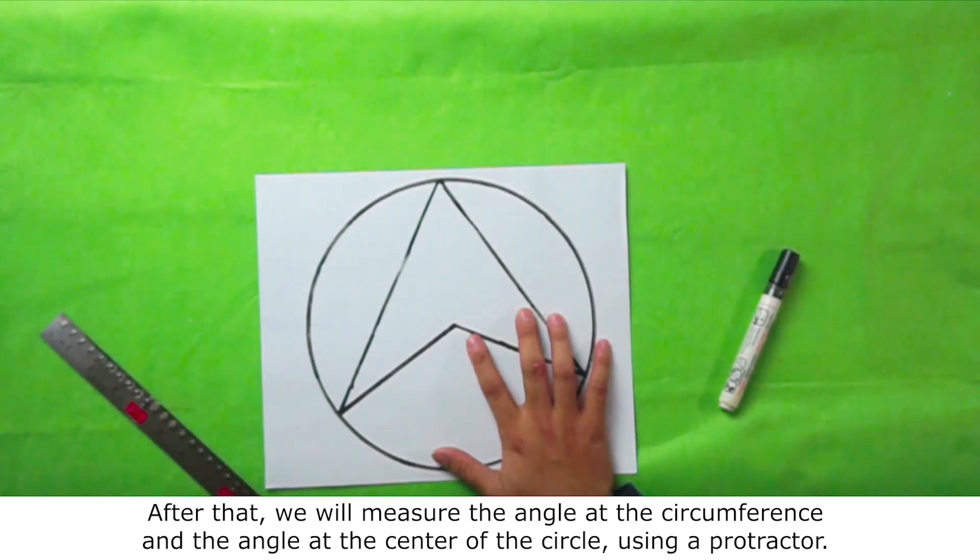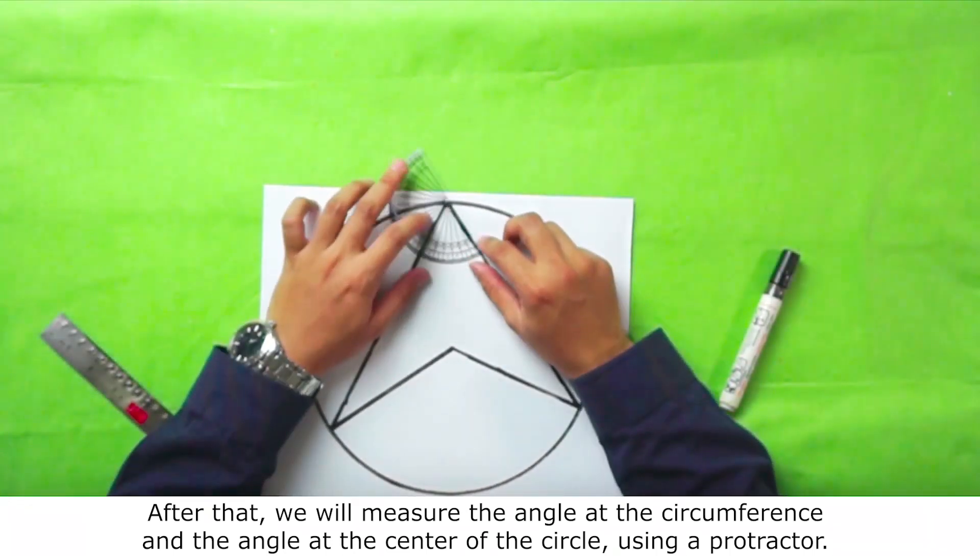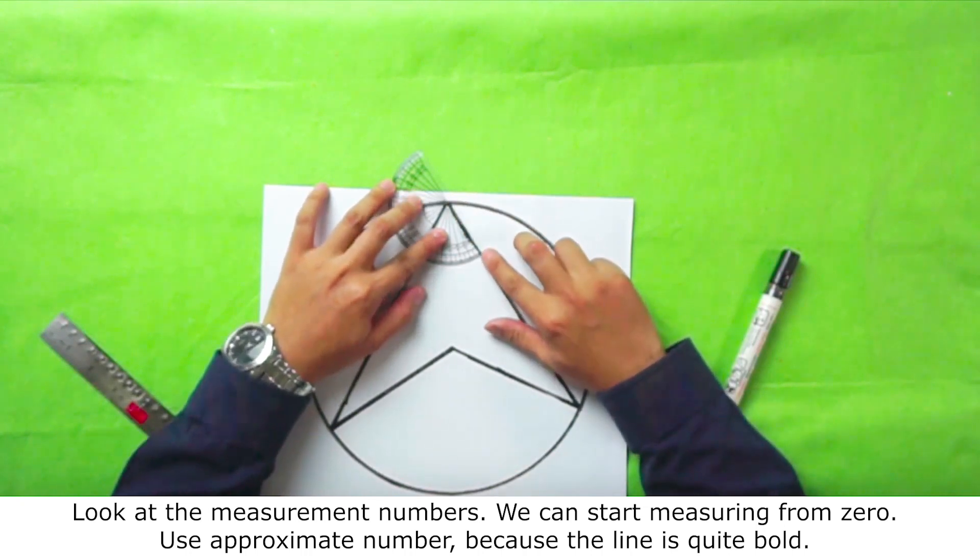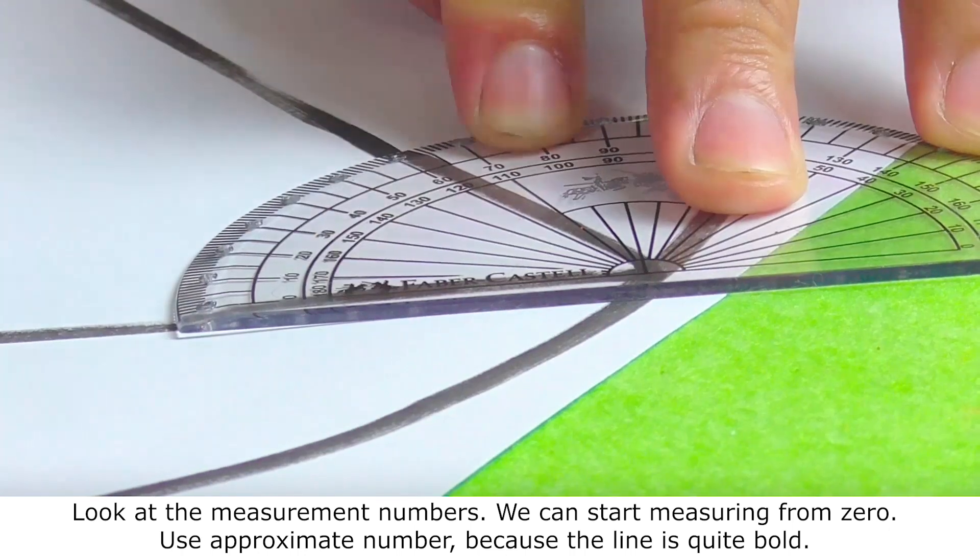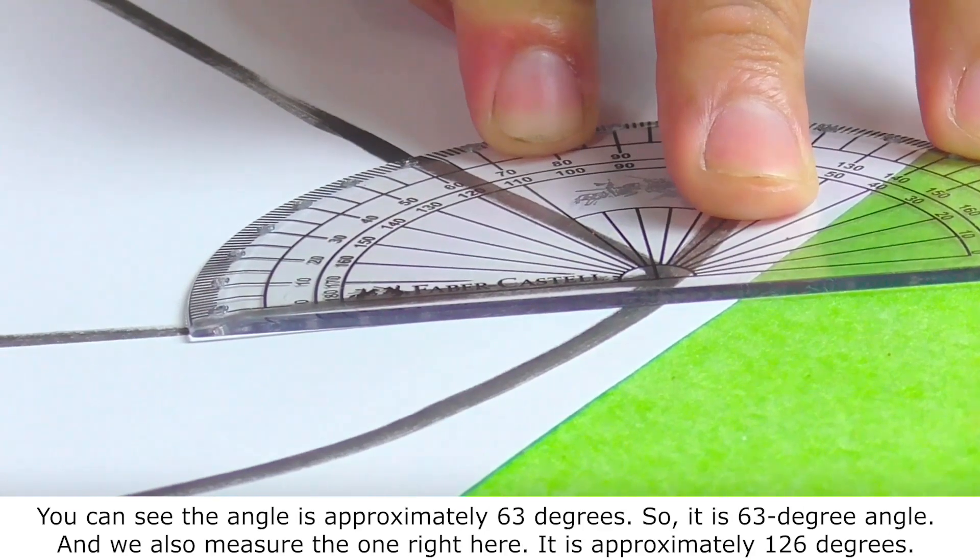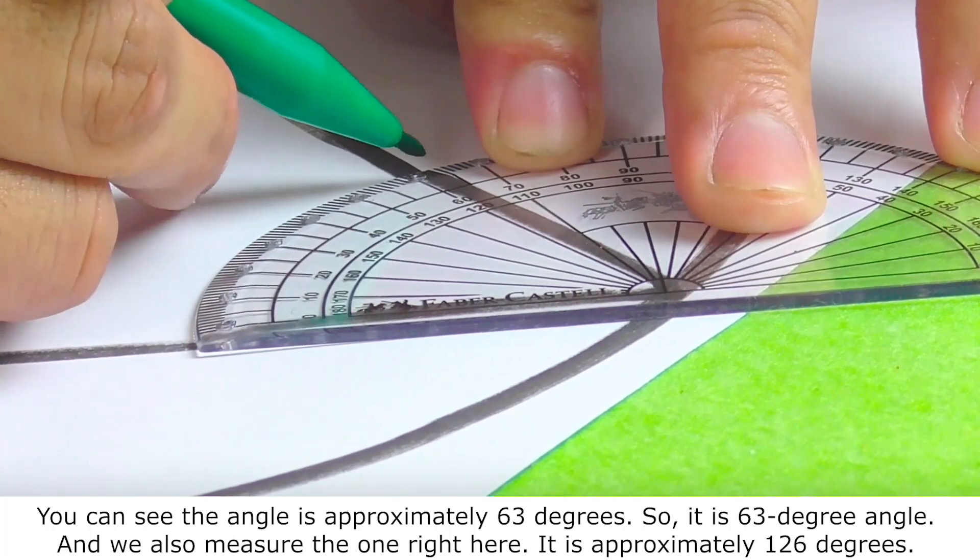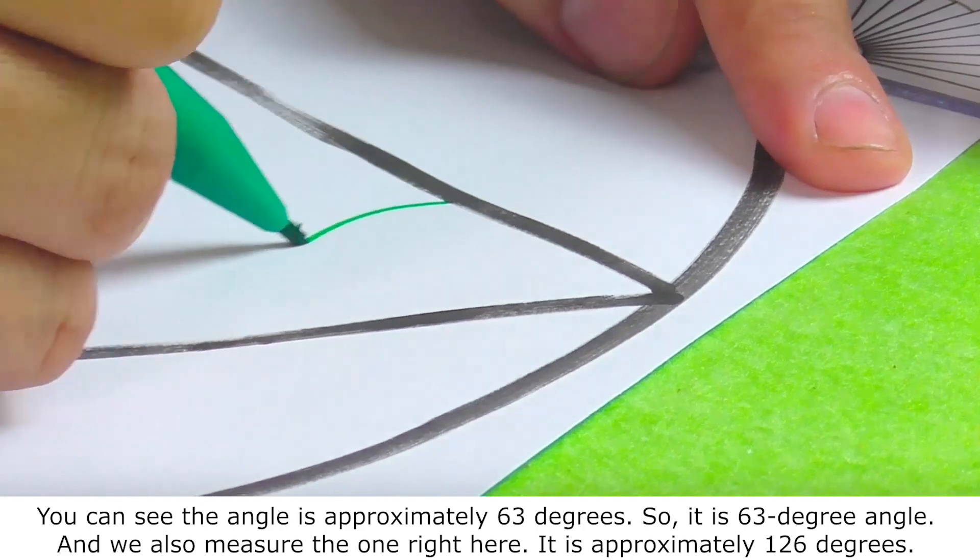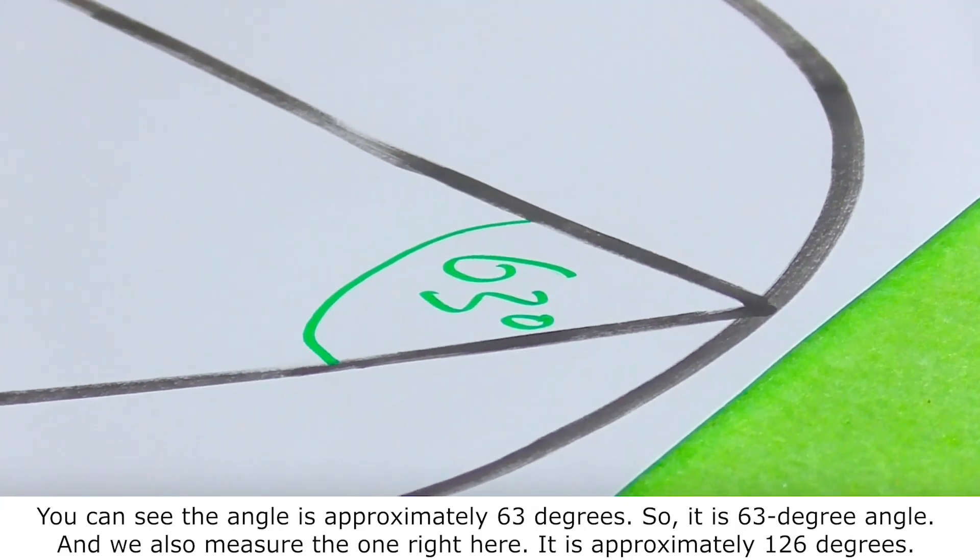After that, we will measure the angle at the circumference and the angle at the center of the circle using a protractor. Look at the measurement numbers. We can start measuring from zero. Use approximate number, because the line is quite bold. You can see the angle is approximately 63 degrees. So it is 63 degree angle. And we also measure the one right here. It is approximately 126 degrees.